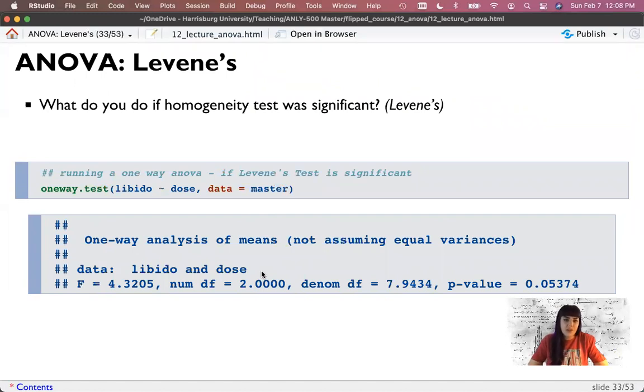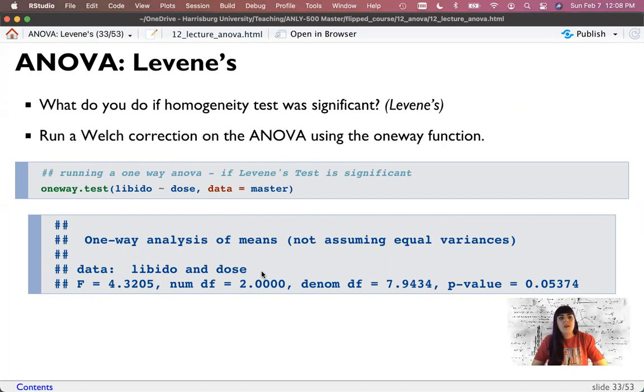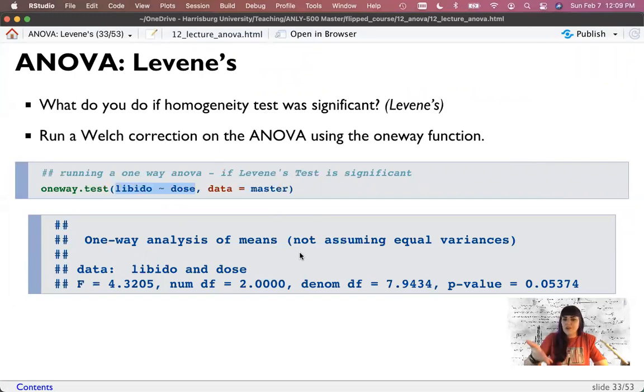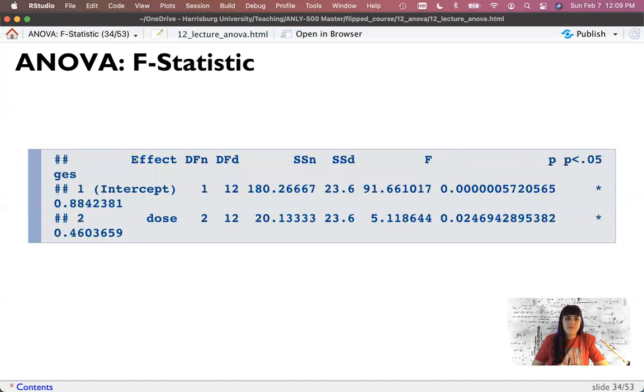Now, if that homogeneity test was significant, let's say Levene's test was significantly bad, because remember this would be a bad thing because that would say that there's heterogeneity of the variances. What we could do is run a Welch test. That should sound familiar because that's the correction we might run on a t-test if we have problems. And the way to do that is using one-way.test. This is in base R. So one-way.test. This looks a lot like LM. Libido is predicted by dose. Data equals our data set. And it corrects for the amount of the variance being unbalanced. And this actually wouldn't be significant. We'd say 2 and 7.94, which is a little weird, but corrections do that. Equals 4.32, and P is 0.054. So this would be our correction. We don't need to do this because our Levene's test was not significant. But if you do, I just want to show you how you could run a one-way test with that Welch correction.